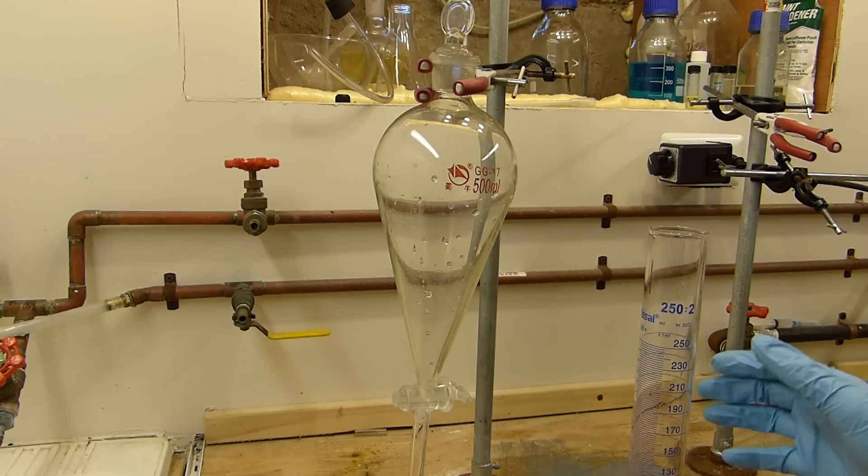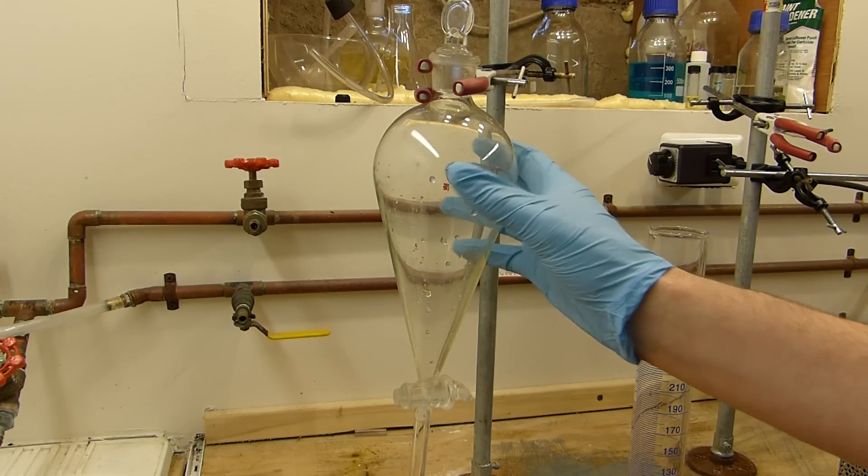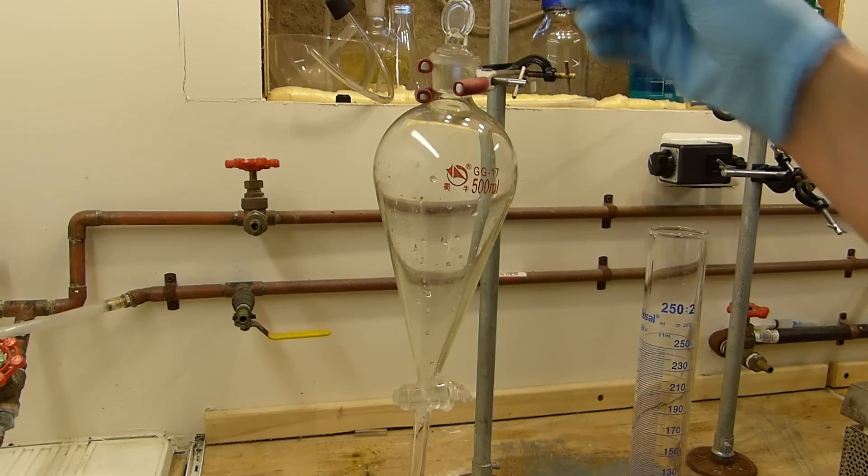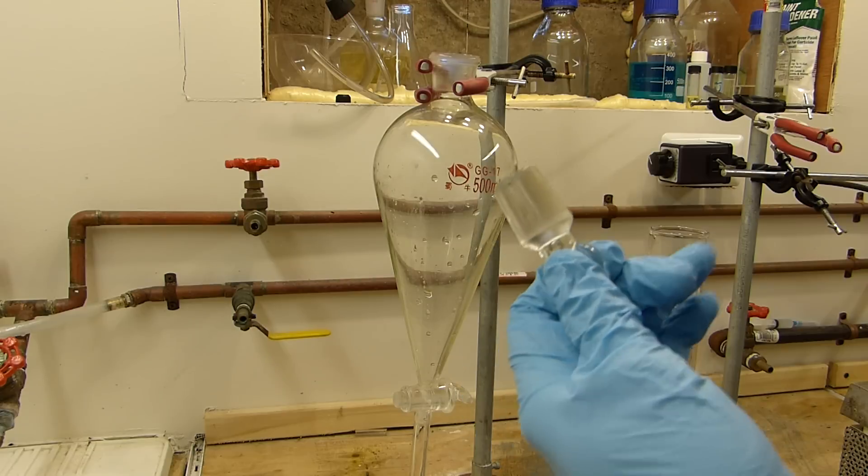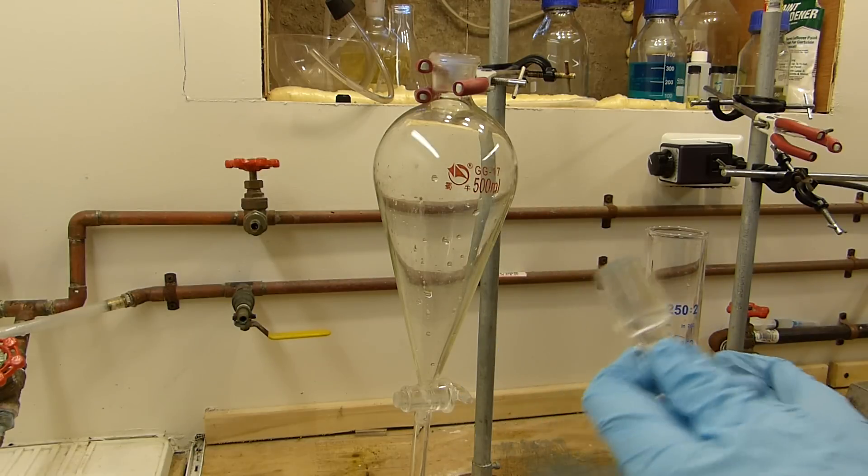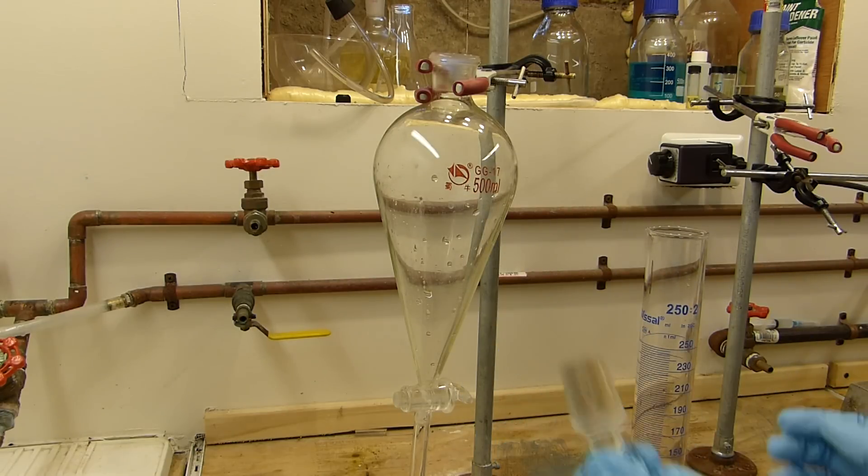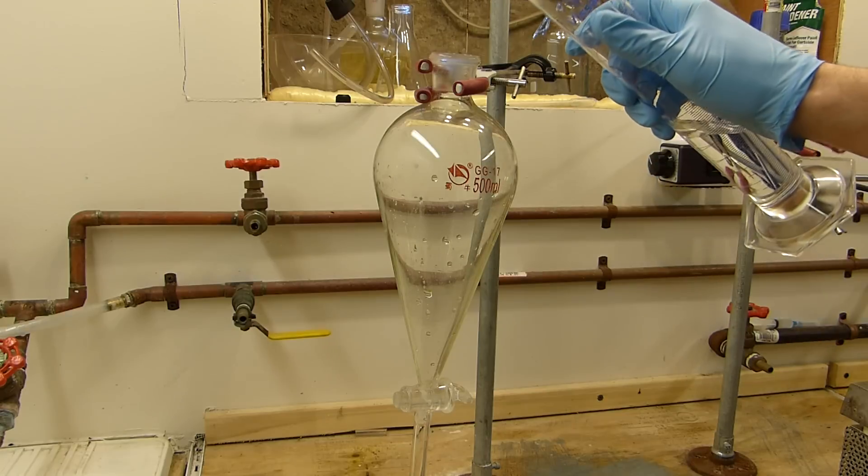We'll now transfer the hydrochloric acid to an addition funnel, making sure the stopcock is first closed. Of course, that's a common mistake to make. The stopcock joints are well greased because this is going to go in the freezer and I don't want the HCl to be escaping into the freezer where it could damage a bunch of things that are in there.